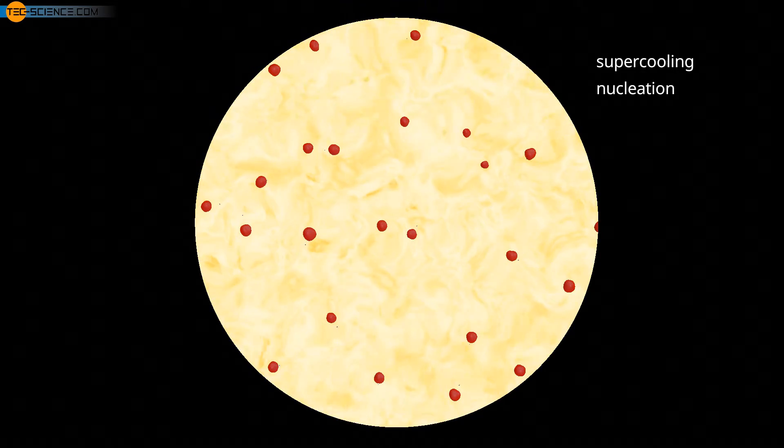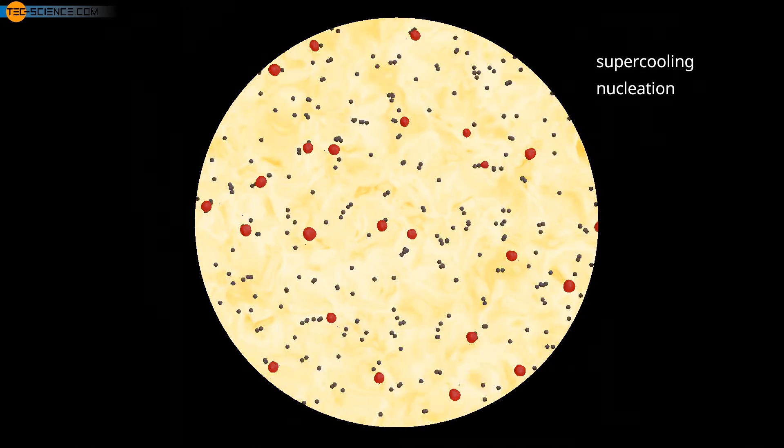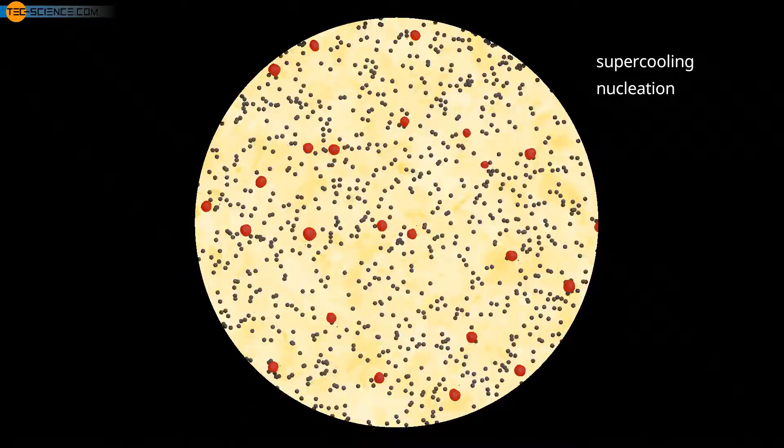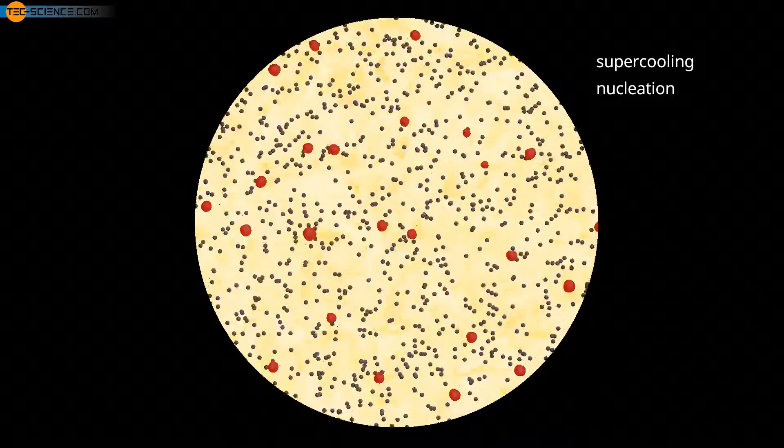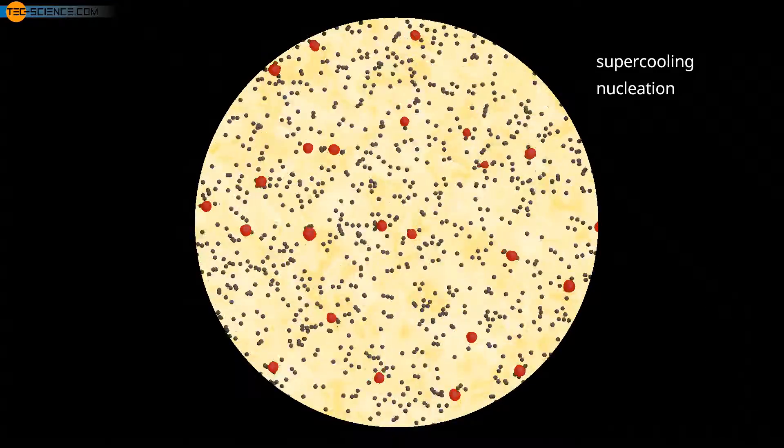Foreign particles, for example, can serve as nuclei, which are particles that consist of a different substance than the particles of the melt. This type of nucleation is also known as heterogeneous nucleation.